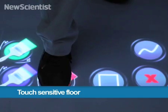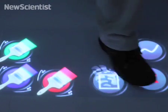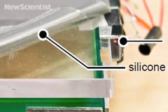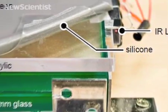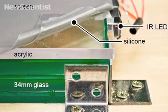This new floor system is sensitive to touch. It's made of a thin layer of silicone placed on top of an acrylic sheet, which is illuminated by infrared light.